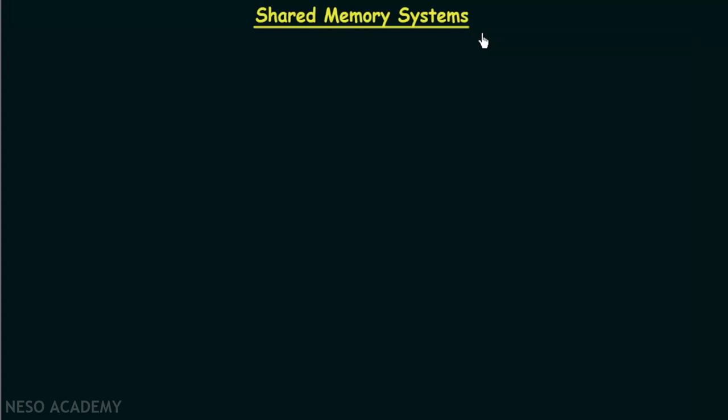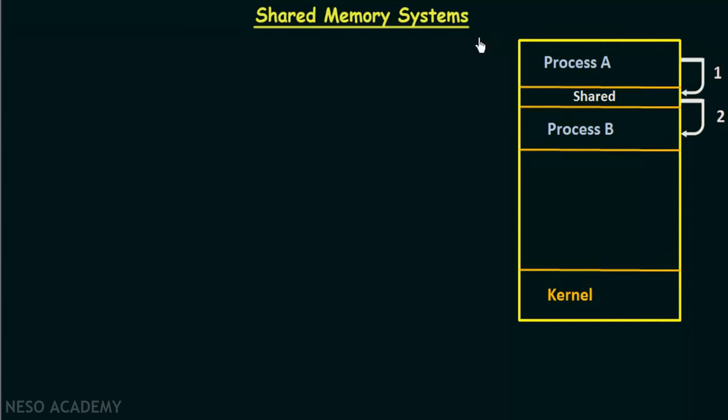In this lecture we will be studying about shared memory systems. In the previous lecture we studied about inter-process communication, where we saw that shared memory systems and message passing systems were two ways in which inter-process communication can take place. So in this lecture we will be seeing in more detail about shared memory systems, its features, and how it actually works.